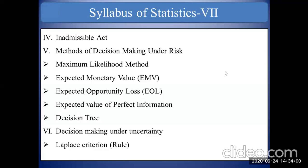The two methods are: decision making under risk, and decision making under uncertainty. Under decision making under risk, we have five methods: first, maximum likelihood method; second, expected monetary value; third, expected opportunity loss; fourth, expected value of perfect information; and fifth, decision tree. These methods are used when risk is present in the market and we know the probability well in advance.